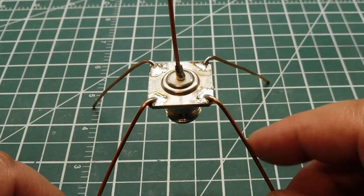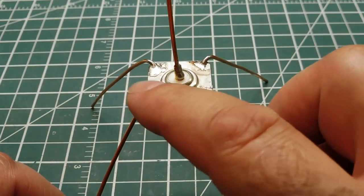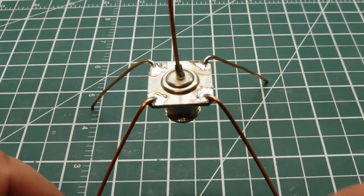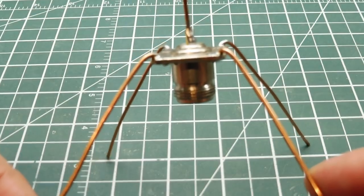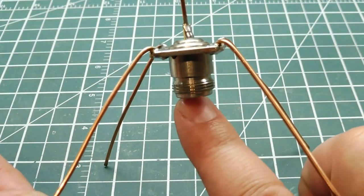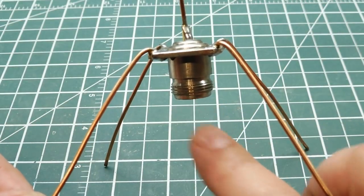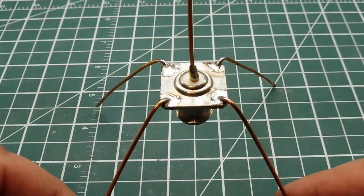Okay, after you solder in your 4 radials onto your connector, you could bend them down at a 45 degree angle from the horizontal plane of the connector. Now increase the input feed impedance of the antenna from 37 ohms up towards 50 ohms, which will give you a better match to your radio.